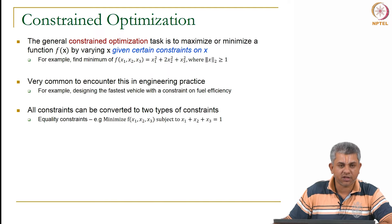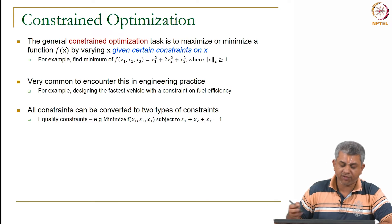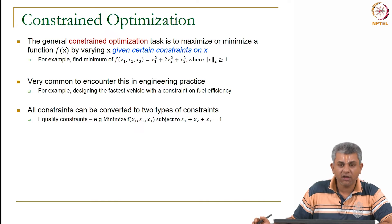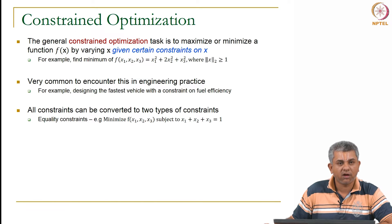Now there can be two types of constraints. One set of constraints are equality constraints. For example, minimize f(x₁, x₂, x₃) given that x₁ + x₂ + x₃ equals 1.